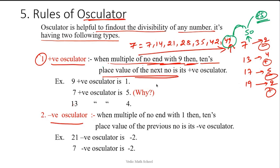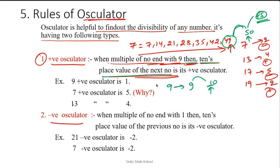Let's understand once more. Suppose the number is 9 — this number itself ends with 9, so we don't go to 18 or 27. The next value is 10, and the tens place value is 1. So the positive osculator of 9 is 1. Similarly, the positive osculator of 7: 7×7 is 49, and the next value is 50, so the positive osculator is 5.